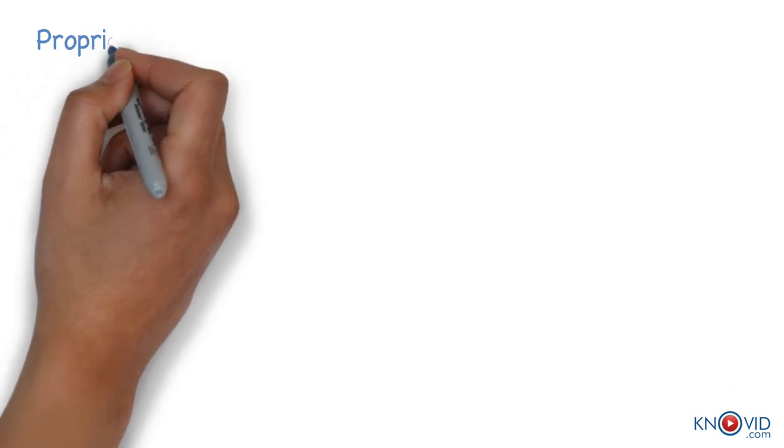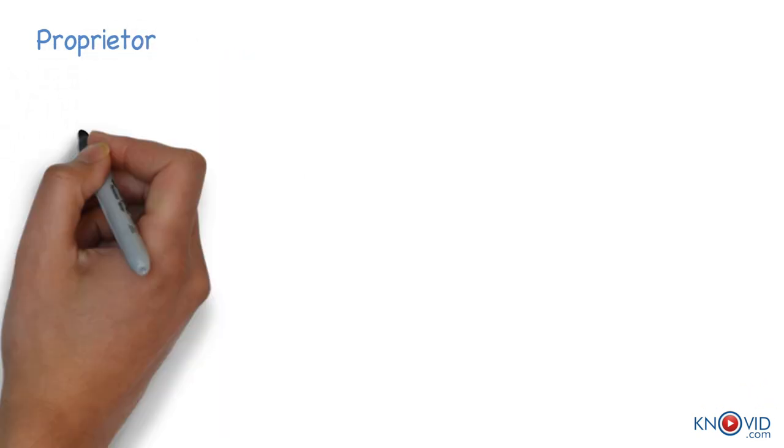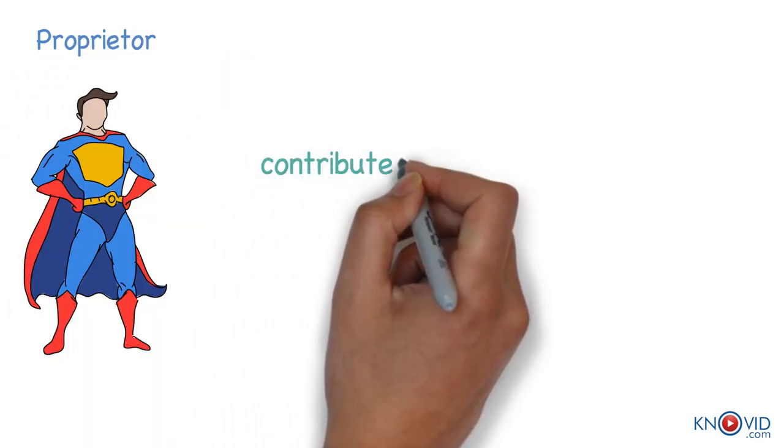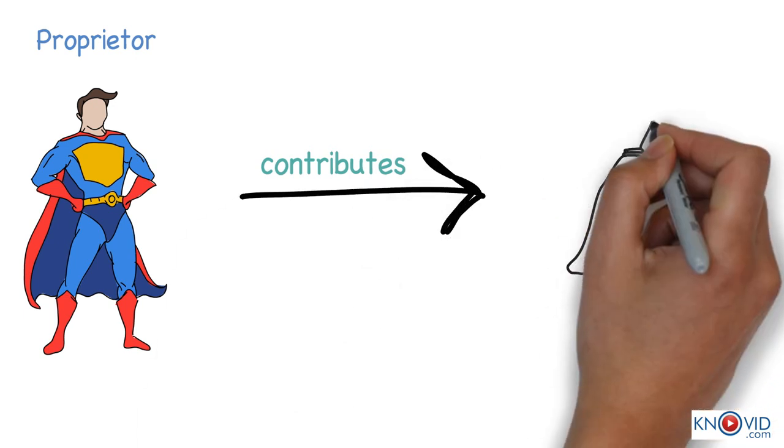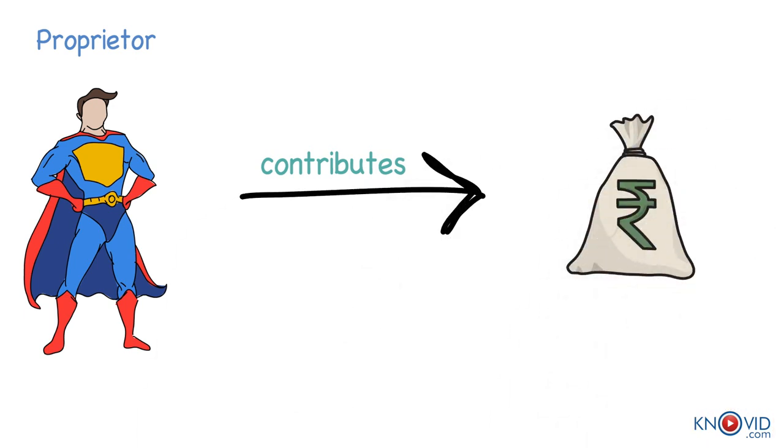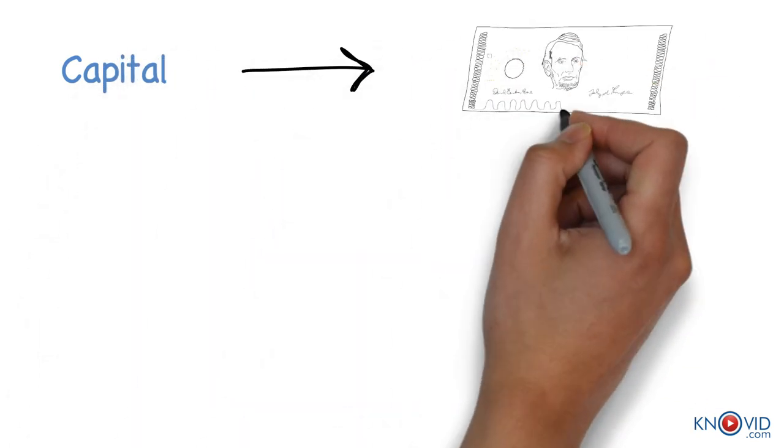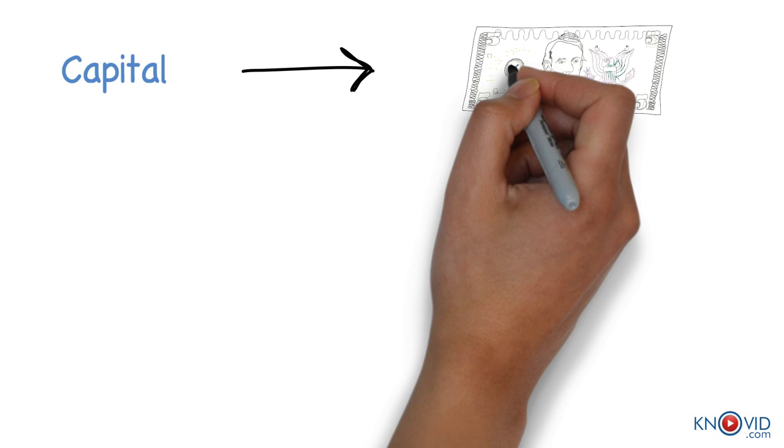Proprietor is a person who owns a business. He contributes capital to the business with the intention of earning profit. Capital is the amount invested by the proprietor in the business.